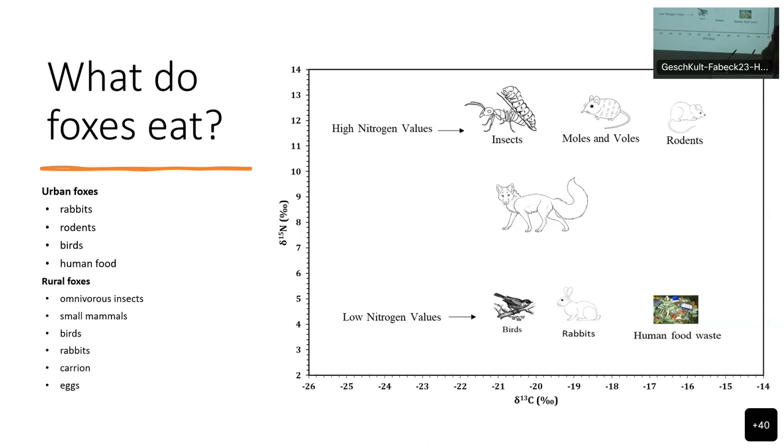We know that key prey species such as rabbits may not be common in farmed areas. Therefore, there are very few, and this may impel foxes in rural areas to consume prey items at higher trophic levels, such as small mammals, small omnivorous mammals, birds, even sometimes occasionally eggs. So, we expect the rural foxes to have higher nitrogen values.